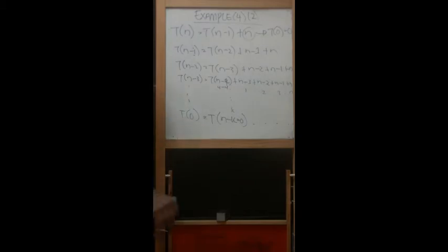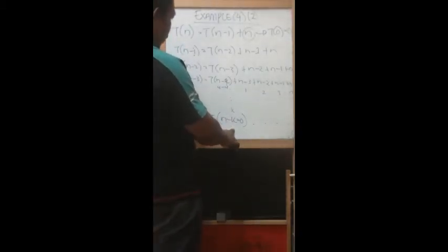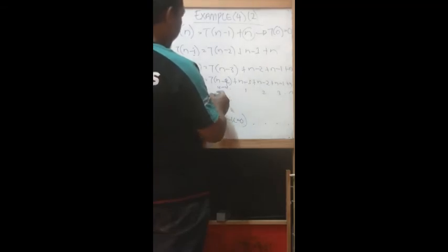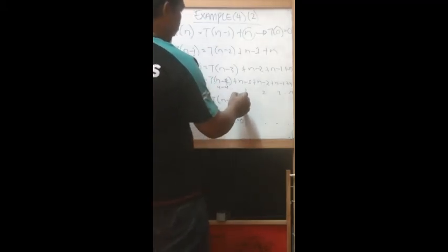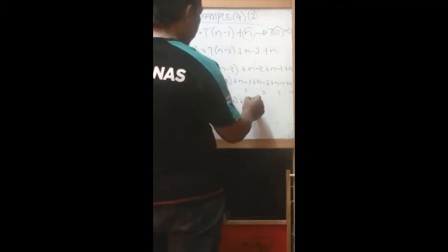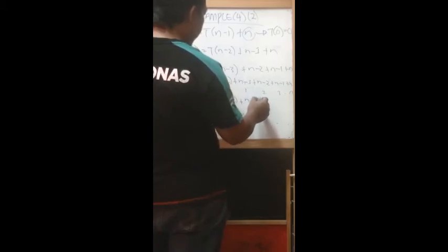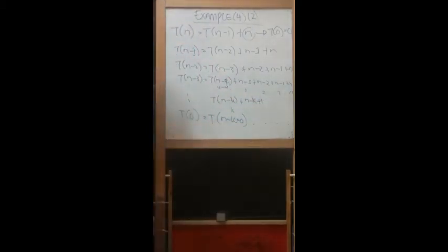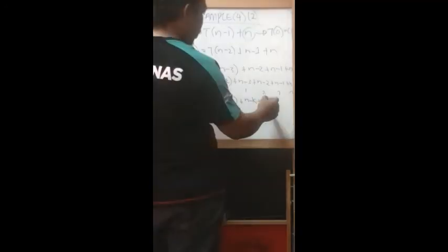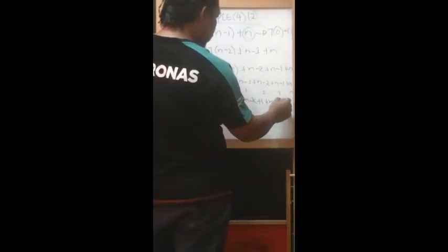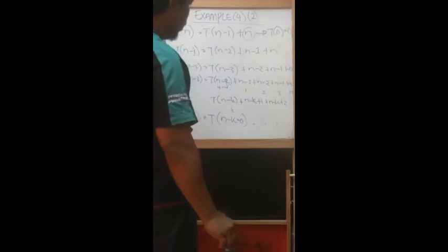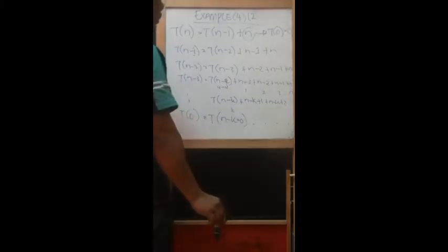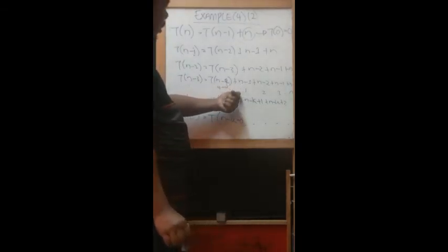You can see the pattern here. This is basically T(n-k) plus (n-k+1), plus (n-k+2), because this is 0, 1, 2, and so on. From here we can already see the pattern clearly.